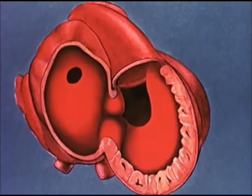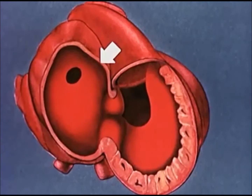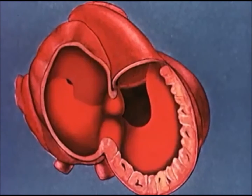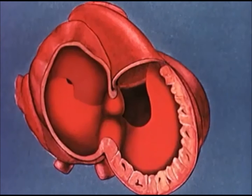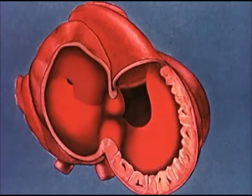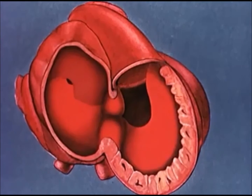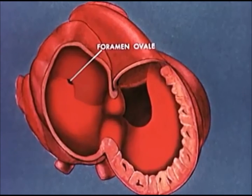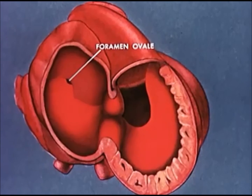Another interatrial septum, the septum secundum, develops from a ridge just to the right of the septum primum and extends down like a curtain over the interatrial fenestration. The advanced edge of the septum secundum forms the foramen ovale, with the septum primum acting as a unidirectional flutter valve.